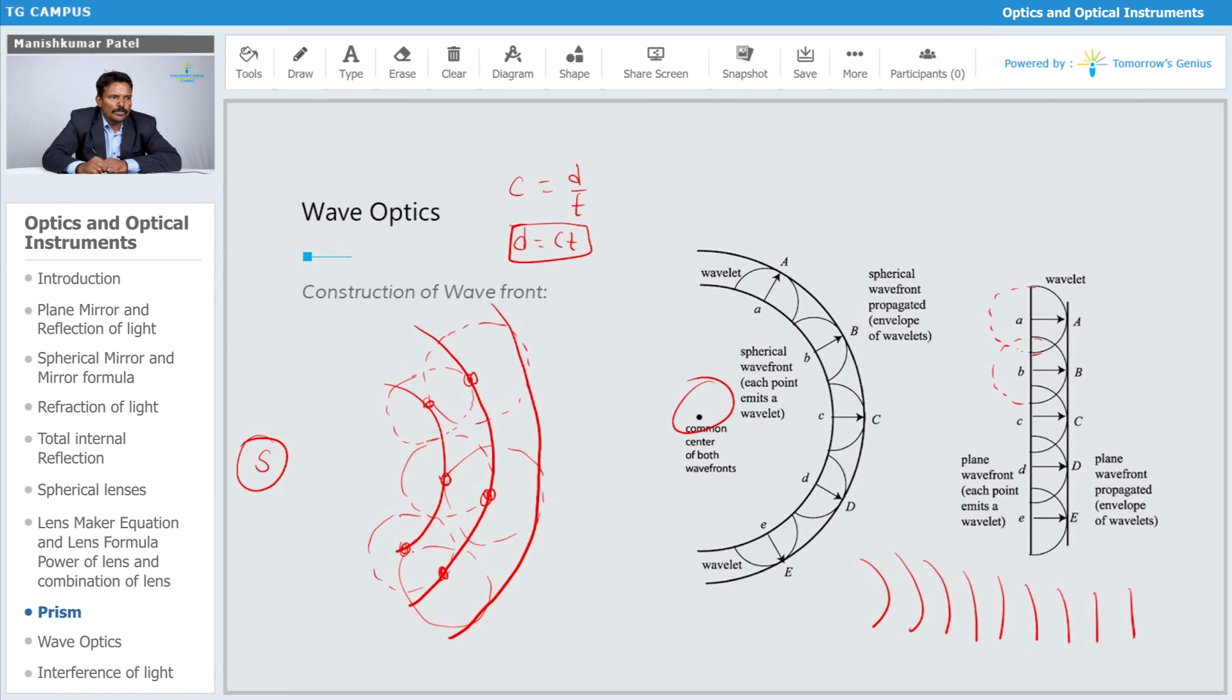These are nothing but the spherical wavefront. This is your common center of both the wavefronts which I had drawn over here. This is how you can draw those wavefronts. It is also very important to represent the light either in the form of wavefront or you can represent that in the form of wave normal.